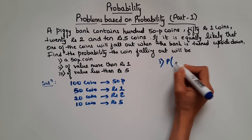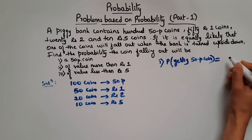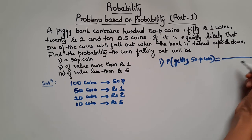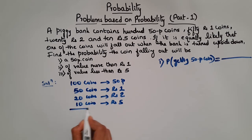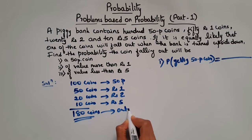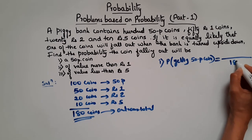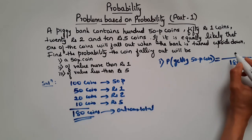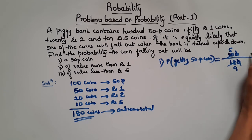Probability of getting a 50 paisa coin equals number of outcomes favorable to E by total number of possible outcomes. Total coins: 100 plus 50 plus 20 plus 10 equals 180. So total possible outcomes is 180. Number of 50 paisa coins is 100. So probability equals 100 by 180, which simplifies to 5 by 9.